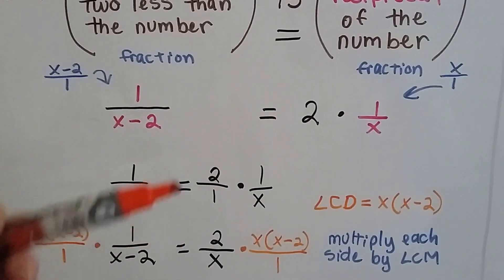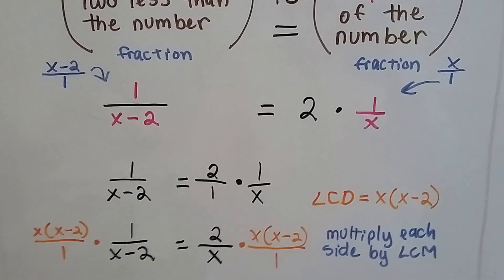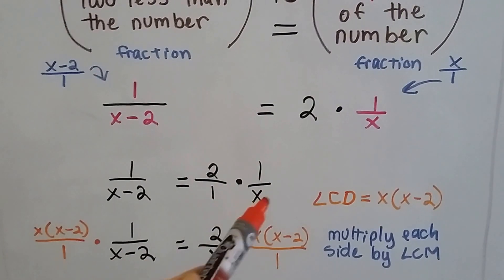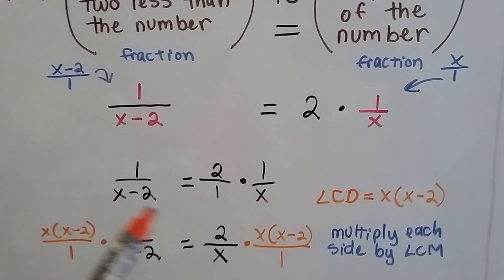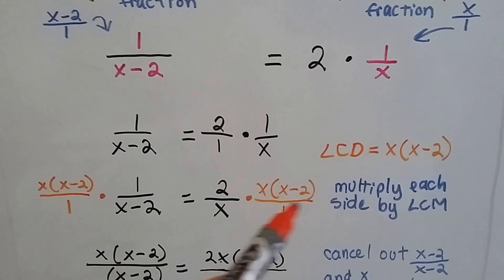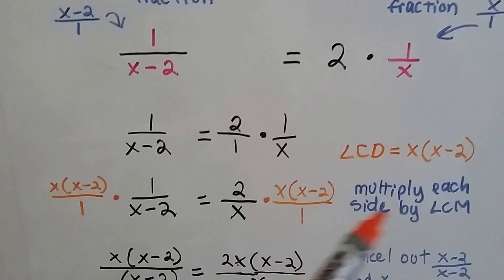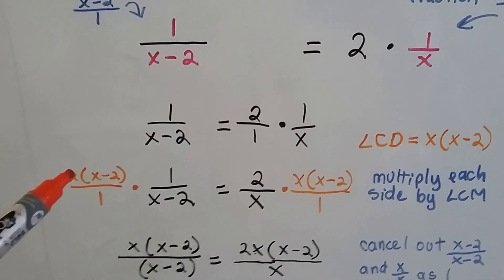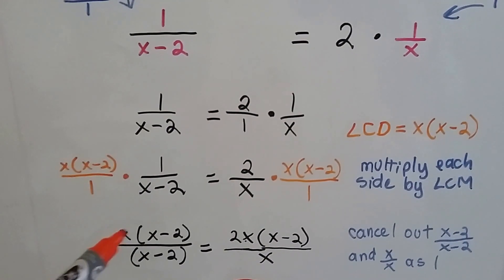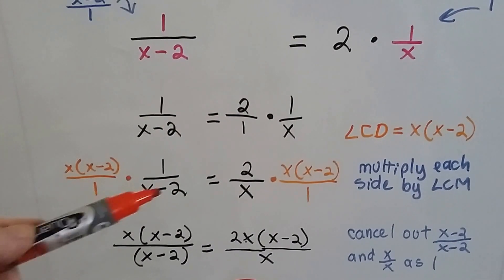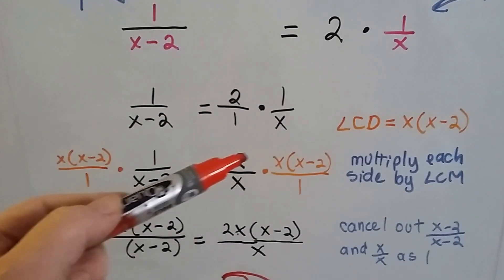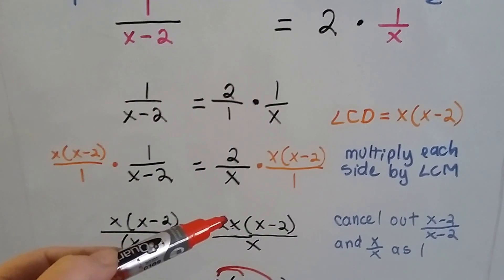Now we have 1 over (x minus 2) equals 2 times (1 over x). We can write 2 over 1, multiply numerators and denominators. The least common denominator is x times (x minus 2). We multiply each side by that LCD: this side times x times (x minus 2), and on the other side we get 2x times (x minus 2) over x.